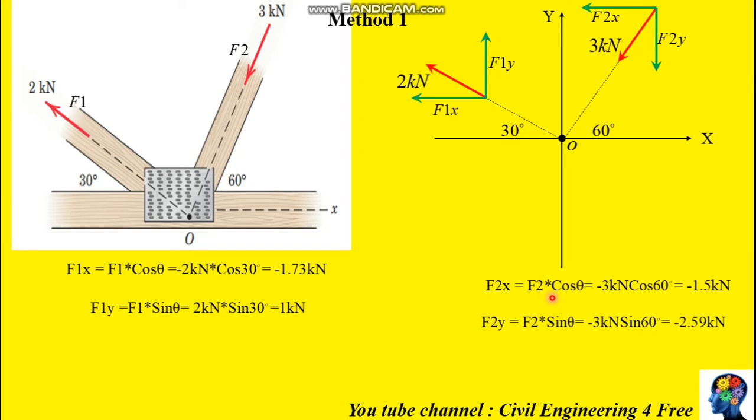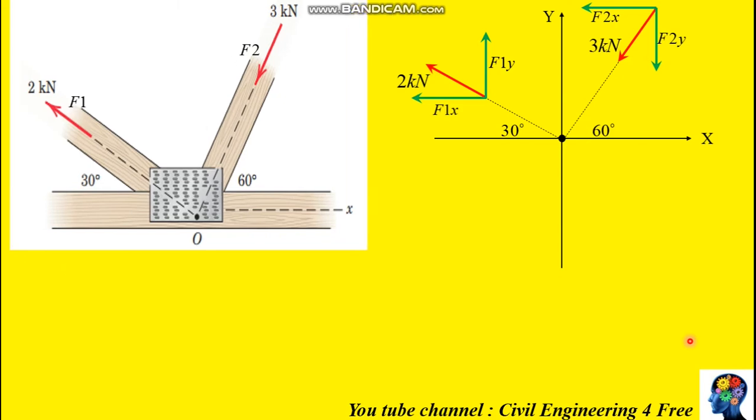F2x, sorry. F2 multiplied by cosine of the angle, cos 60 degrees, is in the negative x direction. And F2y will have negative 2.59 kilonewton. The next step is to calculate the resultant of the force.